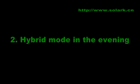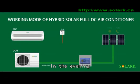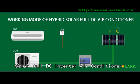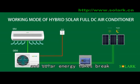Hybrid mode evening: in the evening, the solar full DC inverter air conditioner is powered by the grid alone, and solar energy takes a break.